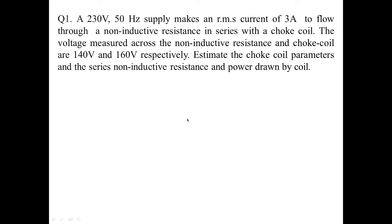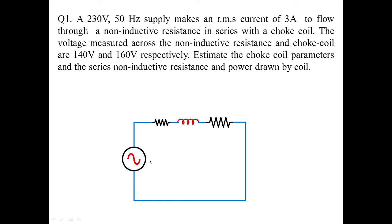How do we understand this problem? It is a single circuit where you have a voltage source and a choke coil. A choke coil is supposed to have a resistance in series with an inductor. This choke coil is in series with a resistance called a non-inductive resistance. The parameters of the choke coil are its internal resistance along with the inductive reactance.